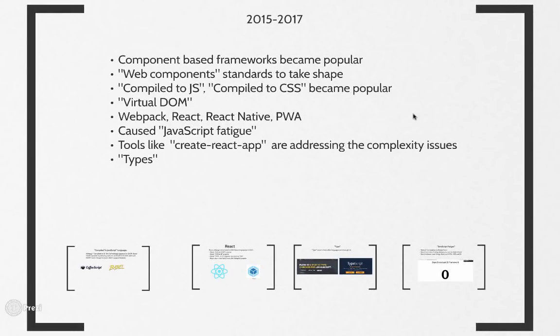That brings us to the 2015 to 2017 time frame, when a lot of things started to become popular and the way we write JavaScript started to completely change. Component-based frameworks became popular — the idea being to divide your app into multiple reusable components and then put them back together. The concept of web components started to take shape. And ideas like compile-to-JavaScript, compile-to-CSS, virtual DOM, Webpack, and others started to become popular, causing JavaScript fatigue.